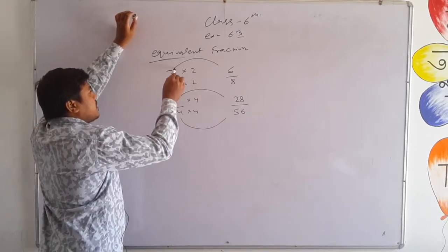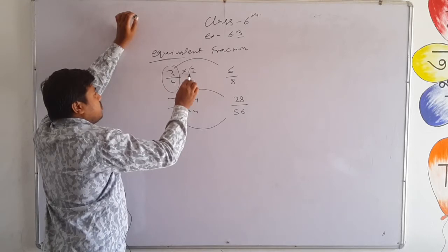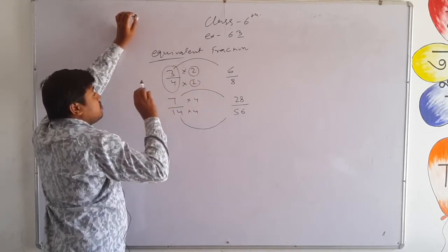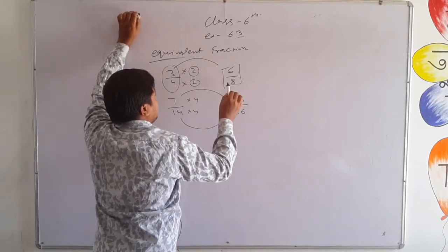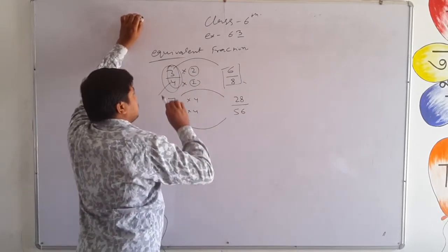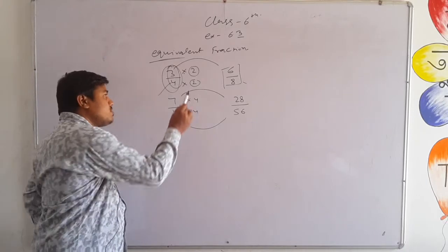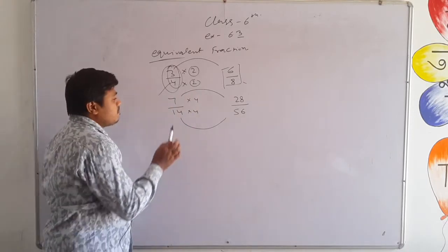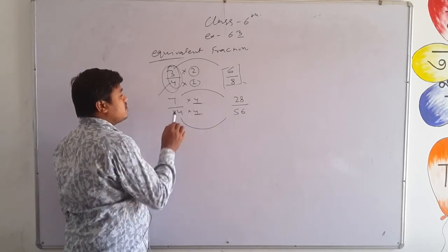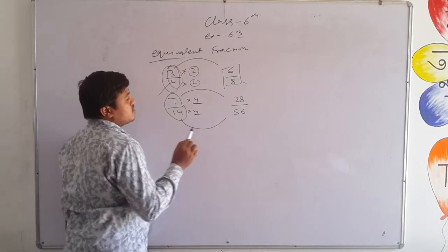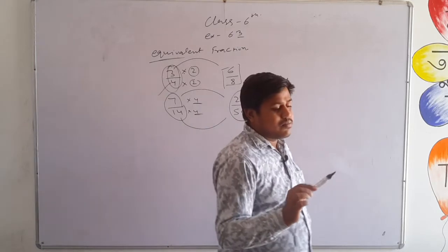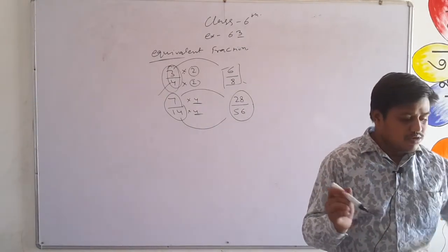This means that if you multiply both the numerator and denominator of any fraction by the same number, the new fraction you get and the original fraction — both will be equivalent. If you multiply them by the same number, they become equivalent fractions. Here, 7 upon 14 was multiplied by the same number to get 28 upon 56 — the original and new fractions are equivalent. This is the concept of equivalent fractions.